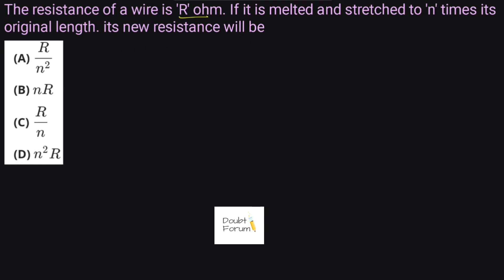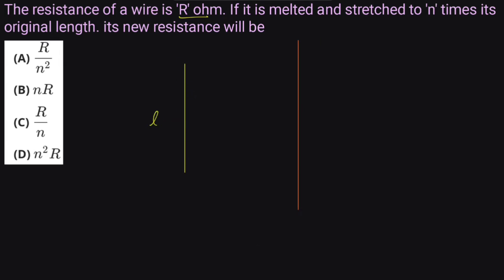Here, there's a conductor of length l, and this conductor has been stretched so that the new length has become n times the initial length. So if l is the initial length of the original wire, the new length has become n times the initial length.